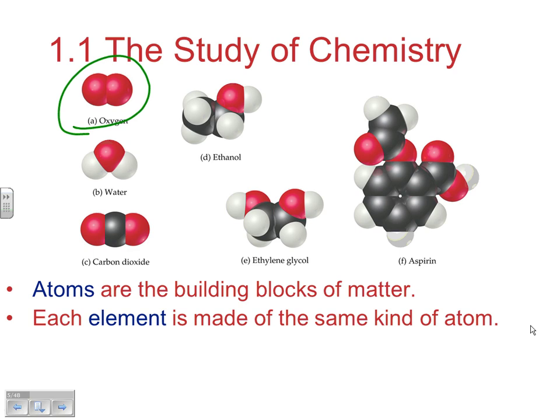Oxygen is elemental but not a single atom — it's a diatomic, a two-atom elemental substance. You need to remember the seven diatomics: hydrogen, oxygen, nitrogen, fluorine, chlorine, bromine, and iodine — sometimes remembered with the mnemonic 'Have No Fear Of Cold Bright Ice' or similar.